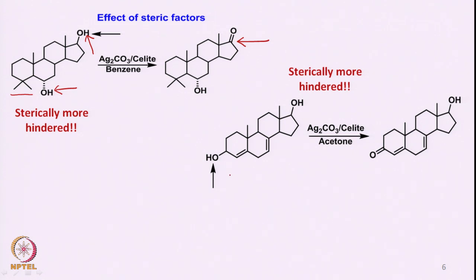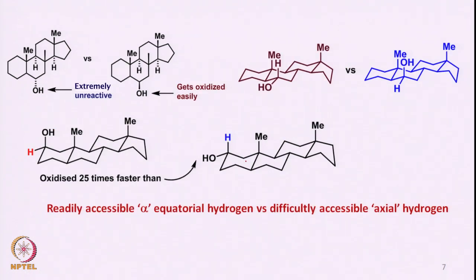In another steroid molecule with two different hydroxy groups, one is less sterically hindered — being away from the ring system — while the other is close to a methyl group. There is therefore preferential oxidation of the less hindered hydroxy group, which is also an allylic hydroxy group, showing a clear steric effect on the oxidation with Fetizon's reagent.